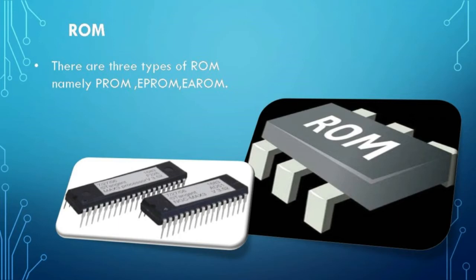ROM stands for read-only memory. The information stored in this memory is permanent in nature and is not erased even when the power goes off. Hence it is called as non-volatile memory. The information stored in this memory is written by the manufacturers. There are three types of ROM namely PROM, EP-ROM and EA-ROM. PROM, that is programmable read-only memory — a programmer can permanently store programs into this chip, unlike ROM where the program is burnt into the chip by the manufacturer.